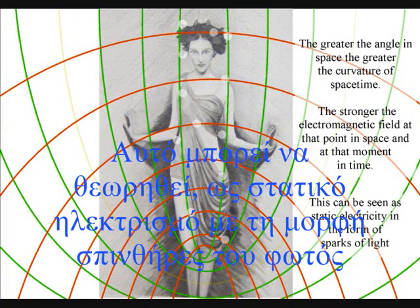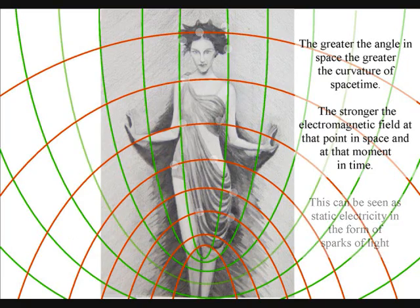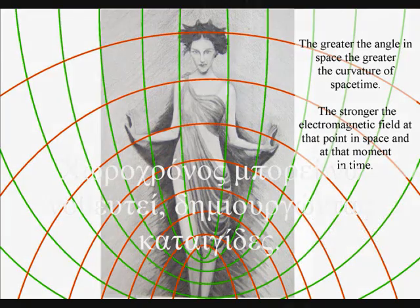The atoms will even distort the geometry of spacetime, creating electrostatic discharge in the form of lightning.